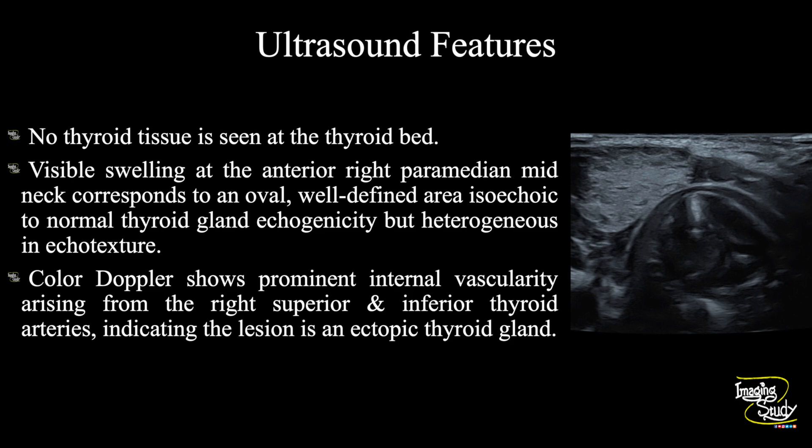In summary, there is no thyroid tissue within the thyroid bed. The visible swelling at the anterior right paramedian mid-neck corresponds to an oval, well-defined, capsulated area that is isoechoic to normal thyroid echogenicity but heterogeneous in echotexture. Color Doppler shows prominent internal vascularity arising from the right superior and inferior thyroid arteries, indicating an ectopic thyroid gland. The vascular flow features also represent thyroiditis in the background.